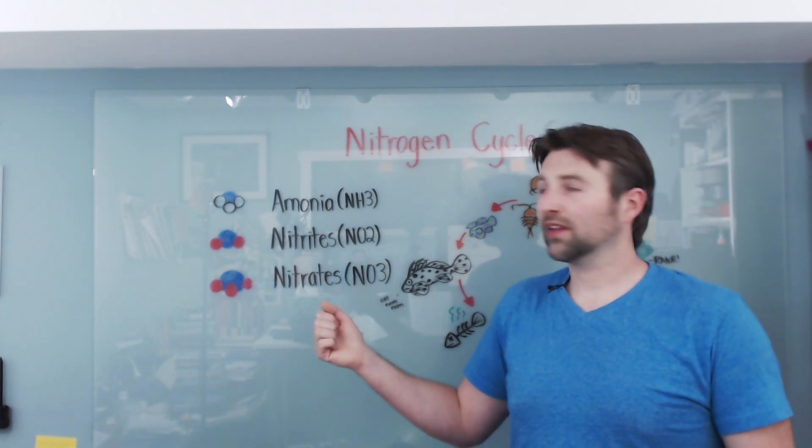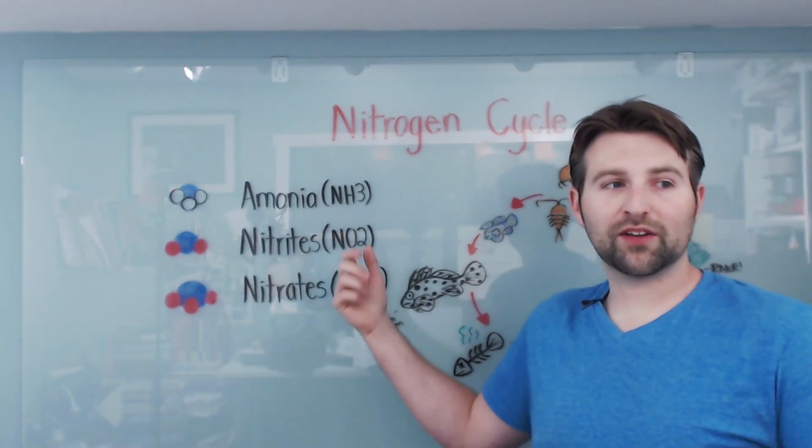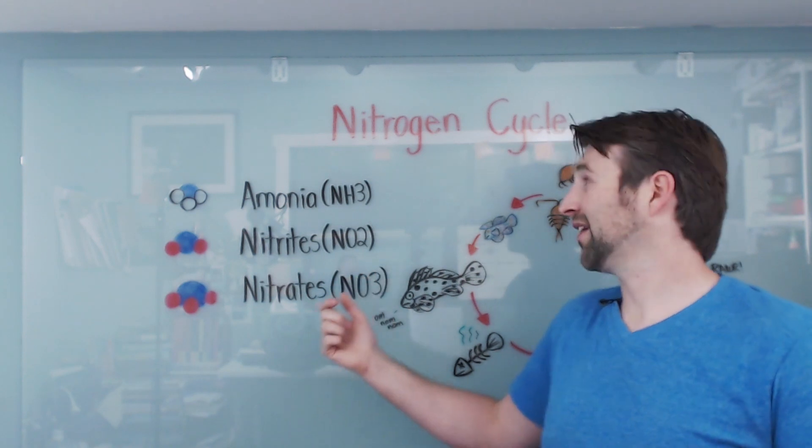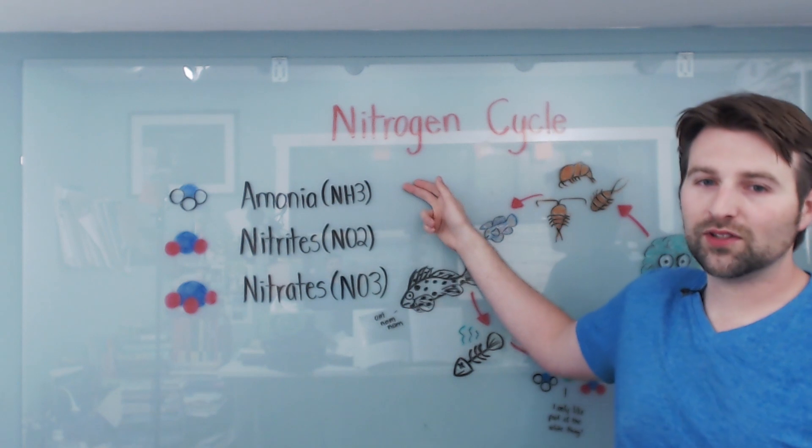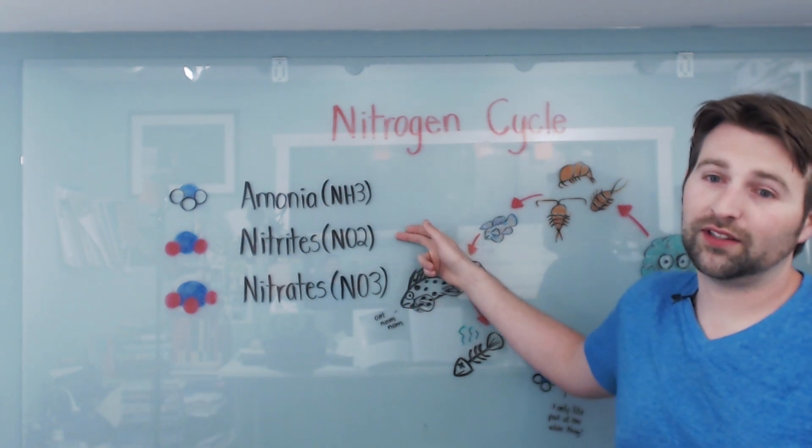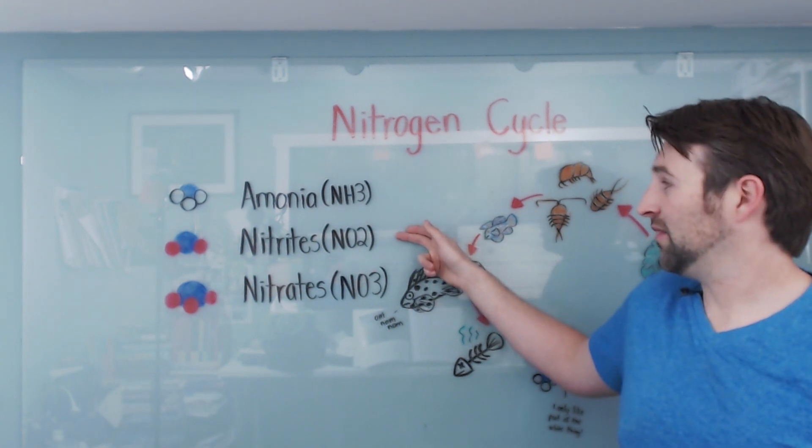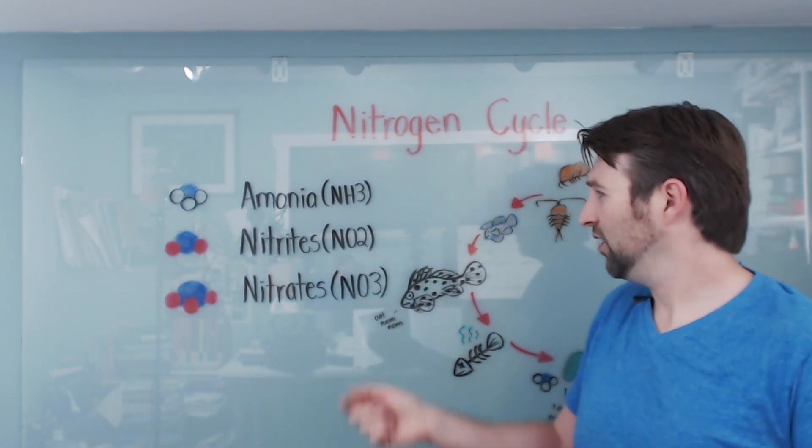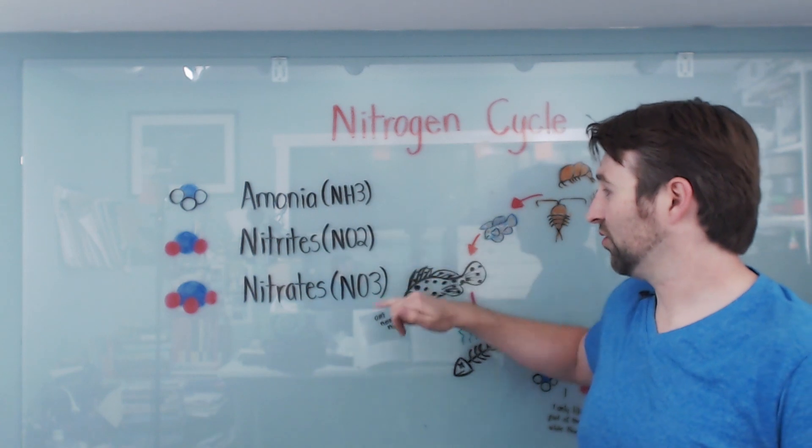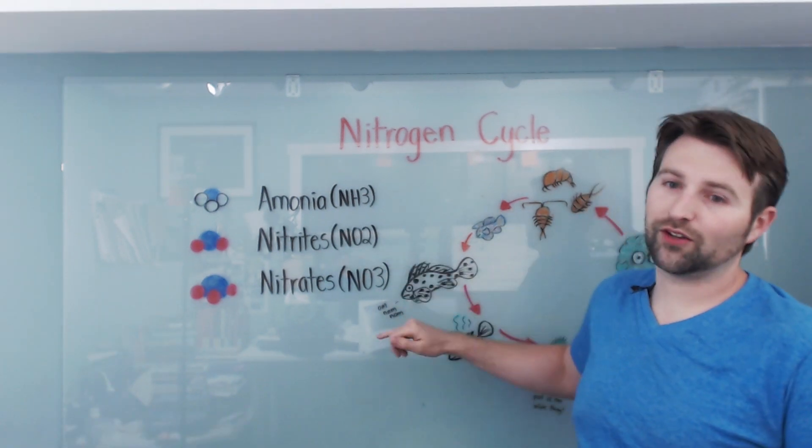Now ammonia will be consumed by a bacteria that will grow called nitrosomonas, and what that does will turn ammonia into nitrites. So we get rid of one toxic chemical, and now we have another toxic chemical to deal with. Now there's another bacteria population, which is called nitrospira, which will help convert nitrites into nitrates. So NO2 into NO3.